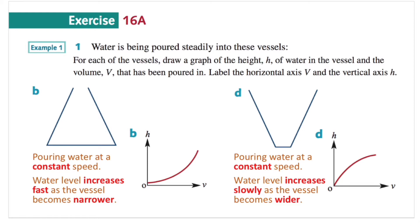I picked questions B and D because they're quite interesting. The shapes are very similar — the only difference is that they are the exact opposite. Vessel B is wider at the bottom, whereas vessel D is narrower at the bottom and gradually becomes wider. As we're pouring water constantly into vessel B, the water level is going to increase faster as the vessel becomes narrower.